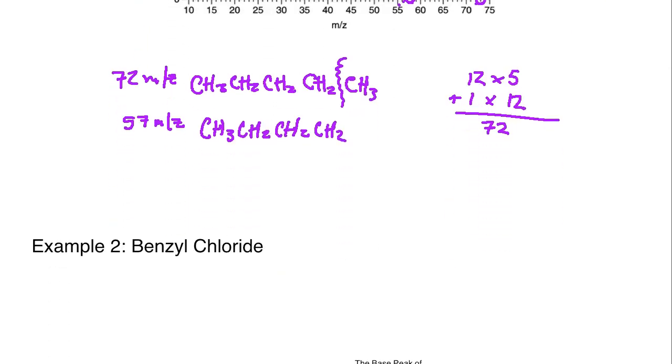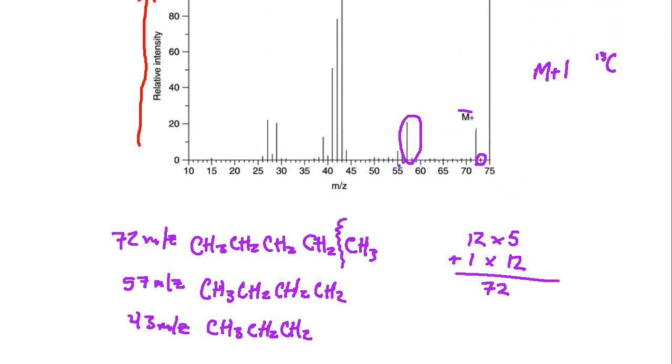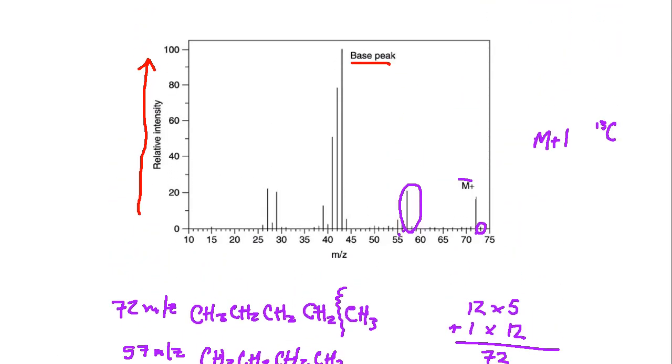I would also expect that I've got other fragments. If I went and I split off again, let's say this time I split it into a propyl. If I add up the propyl, I'm going to end up with 43 m/z. Sure enough, if I go up and I look, here's 40, so it's 40, 41, 42, and then here's 43.